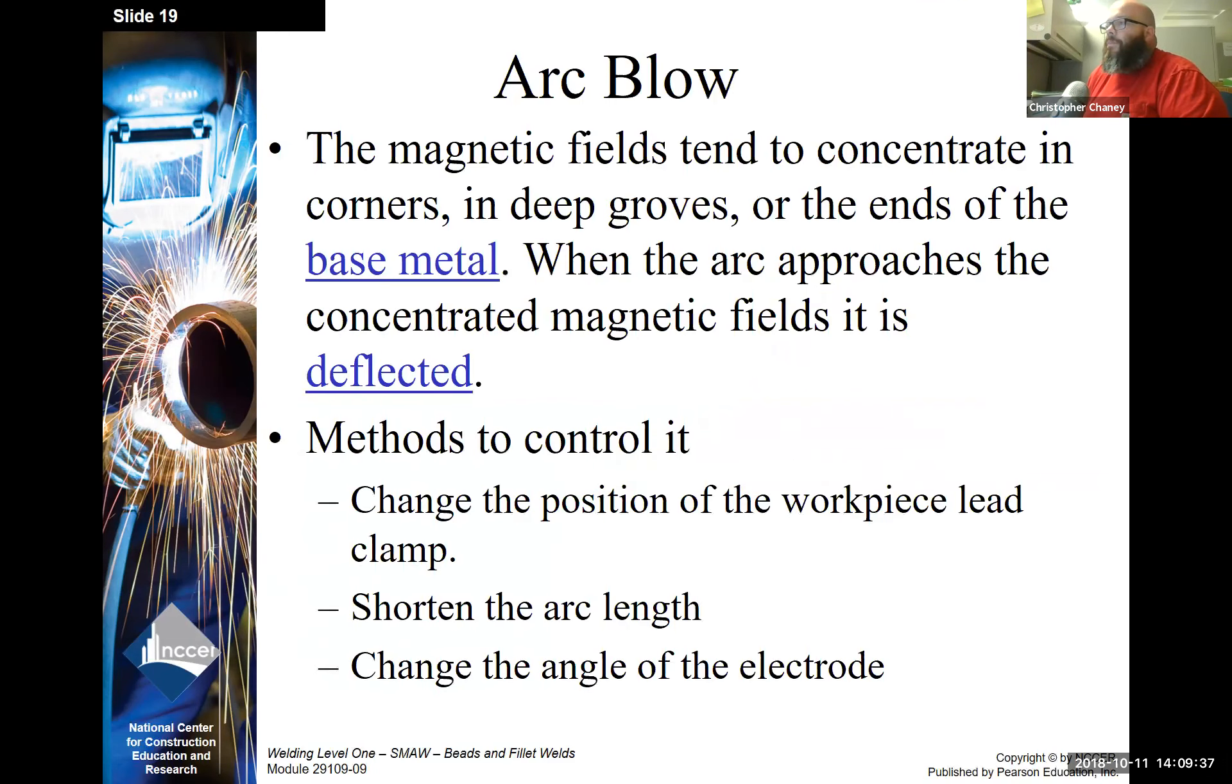Arc blow. The magnetic fields tend to concentrate in the corners or deep grooves or the ends of the base metal. When the arc approaches the concentrated metallic fields, it is deflected. Methods to control it: change the position of the workpiece, lead clamp also referred to as ground, shorten the arc length, change the angle of the electrode.